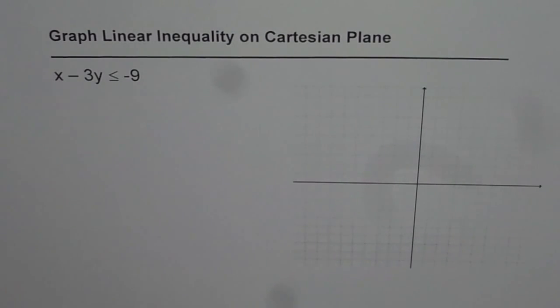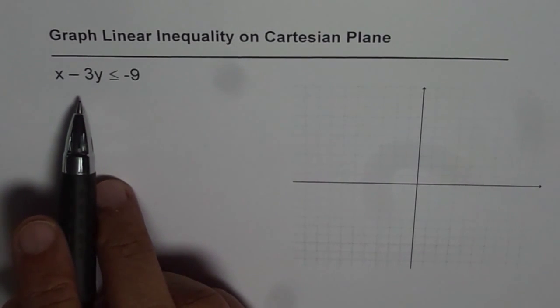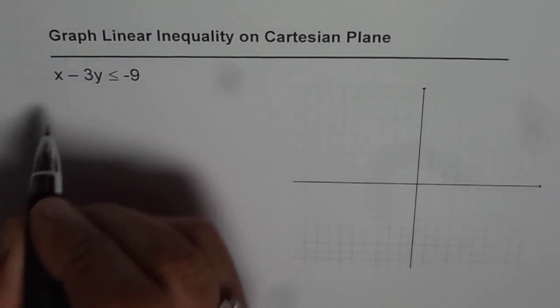Graph linear inequality on Cartesian plane: x - 3y ≤ -9. Here is a method which helps you graph this inequality in quick steps. First step is whenever you're given a linear inequality, write it as an equality and sketch the line.